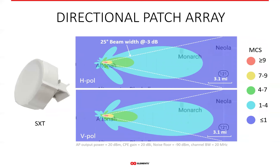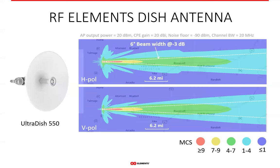Looking at the real coverage plot, more can be said about any antenna. In this case, the directional patch antenna's side lobes are very clear, as well as chain imbalance. Each polarization has quite a different coverage shape, which is an undesirable feature for antennas used for sectorial or point-to-point coverage. An optimized design of RF Elements ultra-dishes helped minimize the side lobes to a large degree, but the physics of dish antennas dictate that side lobes are very hard to avoid completely. Nevertheless, our ultra-dish is optimized for minimum side lobes.